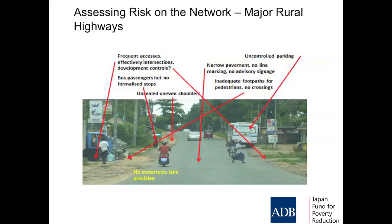You can look at many roads — this is actually in Sri Lanka, but none of this would be unfamiliar to you. There are lots of uncontrolled access points coming out of this road — effectively little intersections. Development controls are variable. Unsealed, uneven shoulders. No hard pavement on the side. Narrow pavement. No line marking. No advisory signage. Uncontrolled parking. No footpaths for pedestrians. No crossings for pedestrians. And this is a national highway. Nothing unique about this, but these are the things I encourage you to start to see about your own networks.